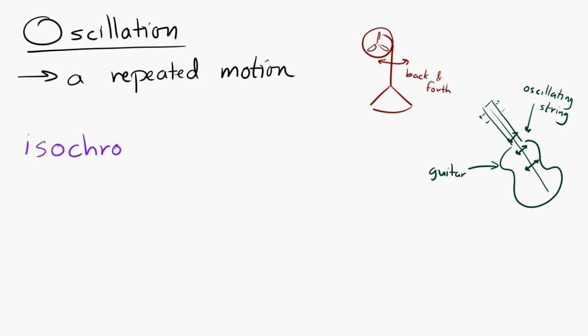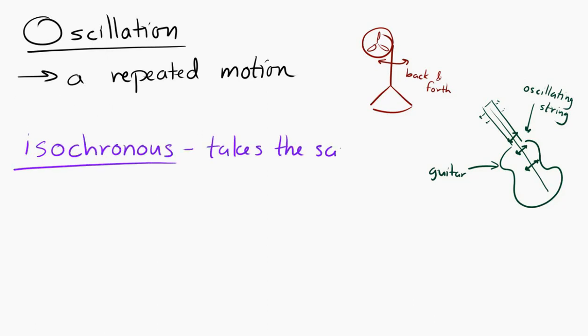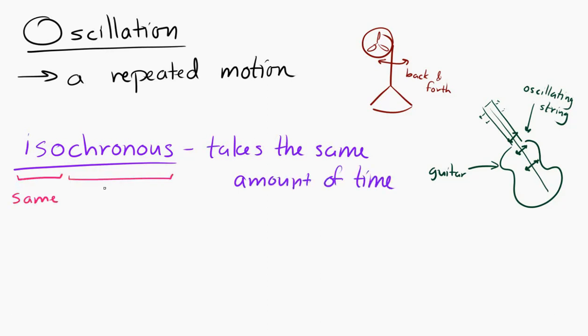An isochronous oscillation is a repeated motion which always takes the same amount of time. Isochronous comes from two words: iso, meaning same, and chronos, meaning time — same time.